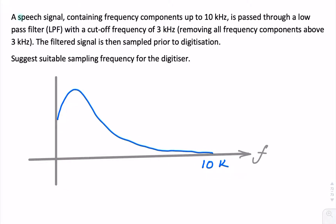In this example, we have a speech signal that appears to be band-limited to 10 kHz. So that's your 10 kHz, the upper frequency.